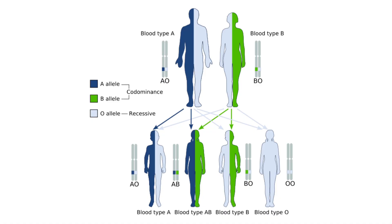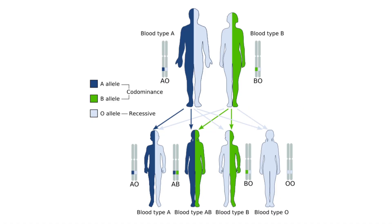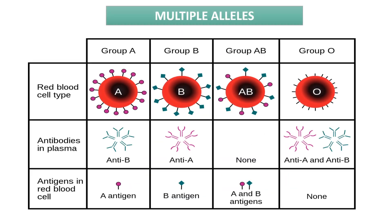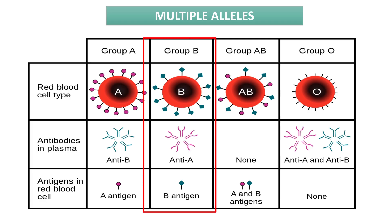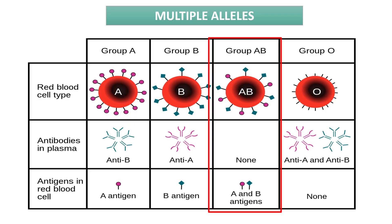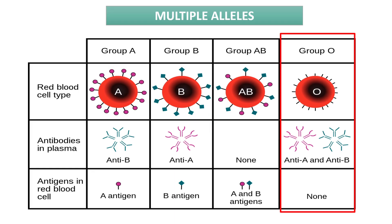Type A and type B parents can also have a child with type O blood if they are both heterozygous. Here are the things you need to remember about the four possible phenotypes for blood type. Blood type A has anti-B antibody and antigen A. Blood type B has anti-A antibody and antigen B. Blood type AB has no antibodies and has AB antigens. Blood type O has anti-A and anti-B antibodies and no antigens on their red blood cells.